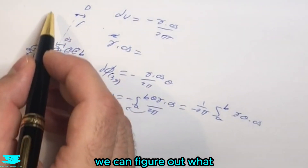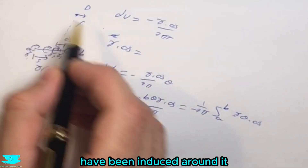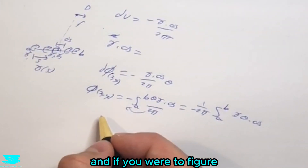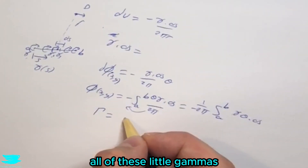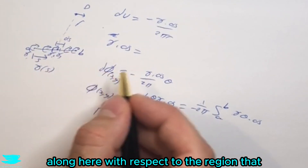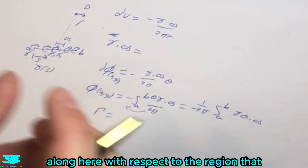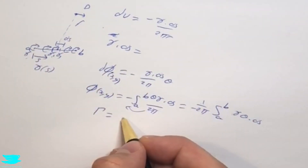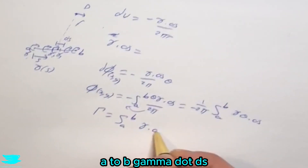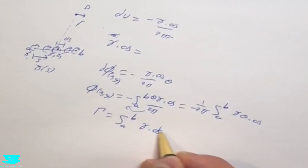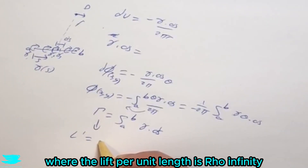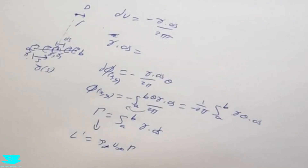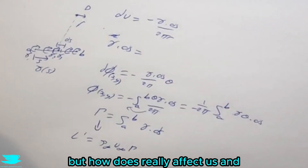Knowing the gammas for the sheet, we can figure out the velocities induced around it. To find the total circulation — big Gamma — for the entire sheet, we integrate all the little gammas with respect to the region they act over: Γ = ∫[A to B] γ·ds. This feeds into the Kutta-Joukowski theorem, where the lift per unit length is: L' = ρ∞ · V∞ · Γ.